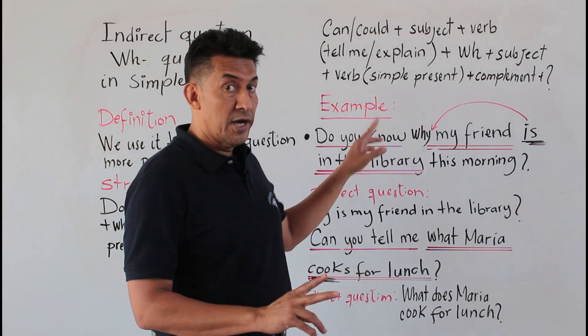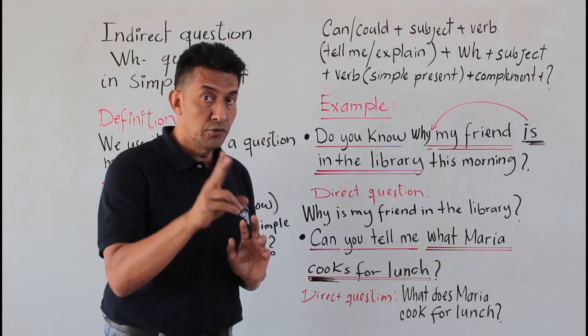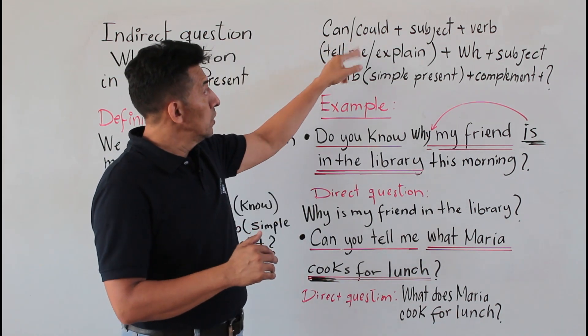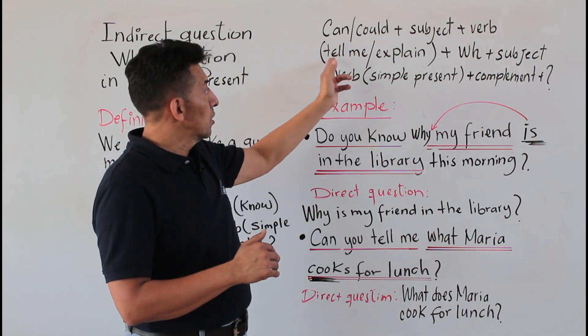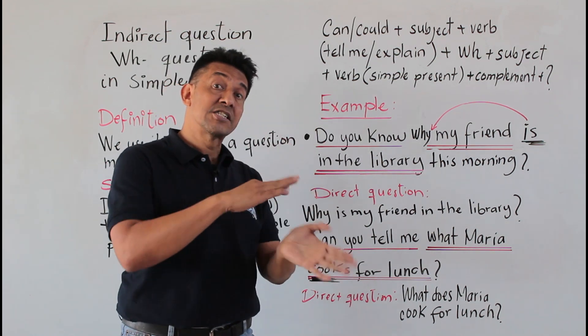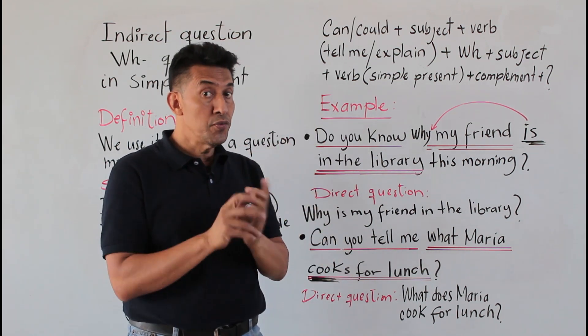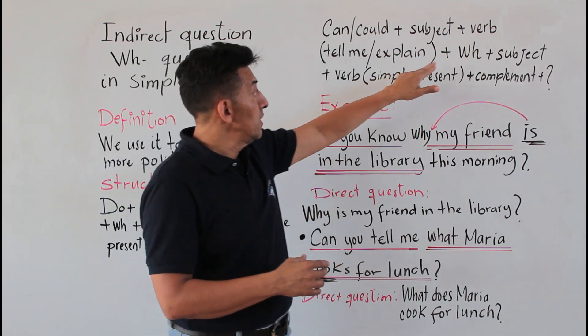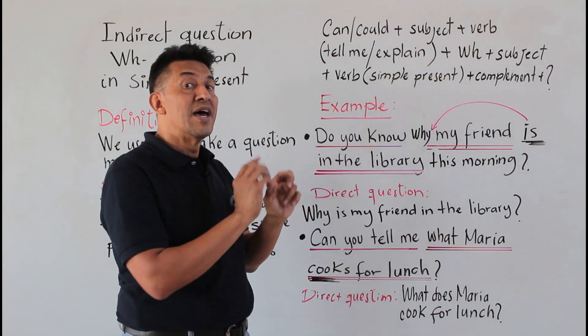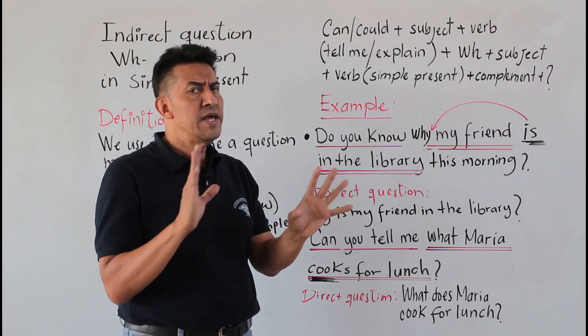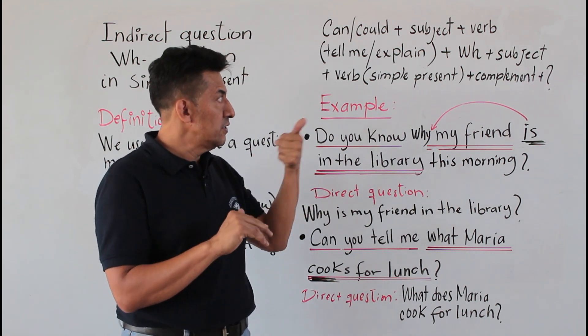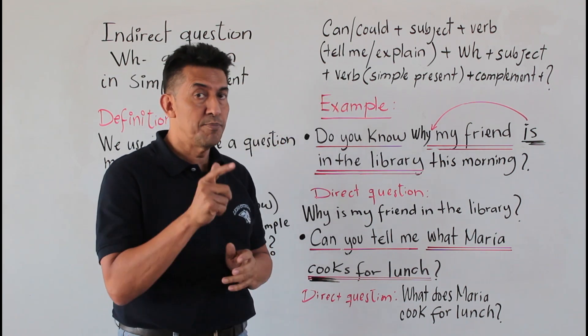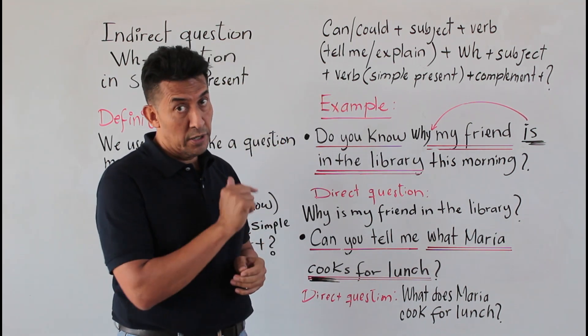The same is for the second structure but using the auxiliaries can and could. You use can or could plus subject plus verb. You can use tell me or explain - either one or the other. Then you use a wh-word, any wh-word, then the subject plus verb. Be careful, it has to be in the simple present, and then the complement and the question mark.